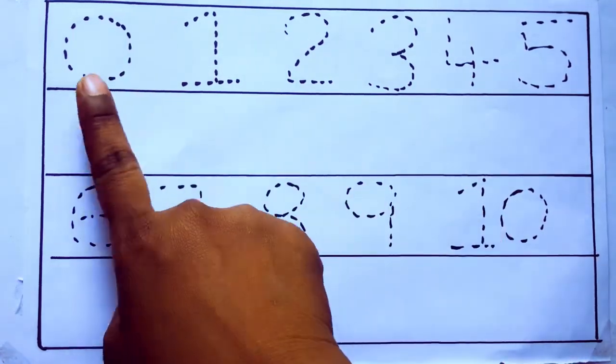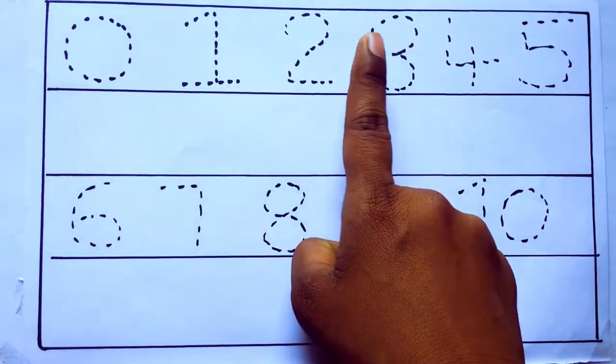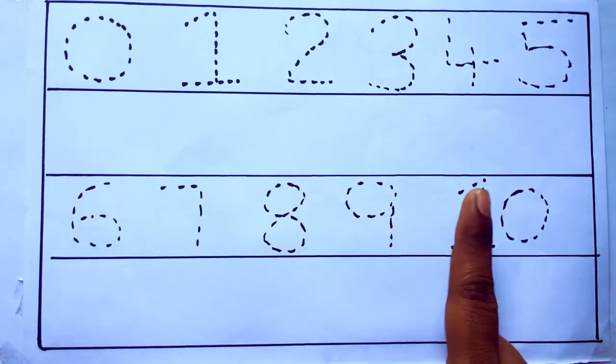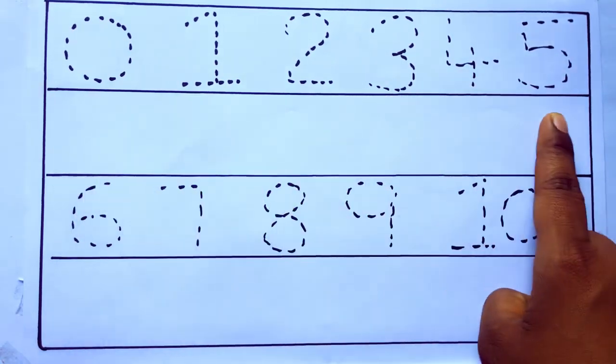0 to 10: 0, 1, 2, 3, 4, 5, 6, 7, 8, 9, 10 and rewriting the numbers.